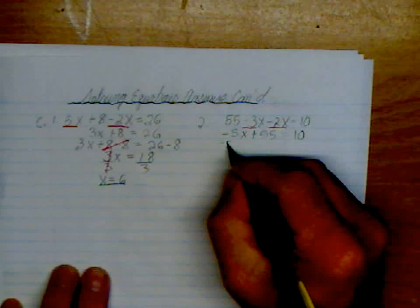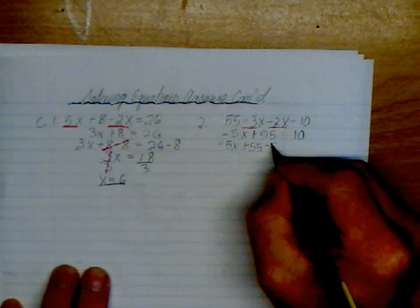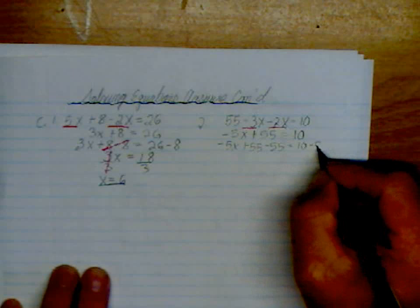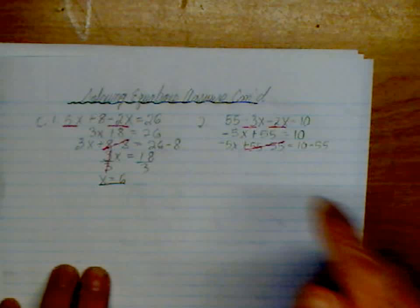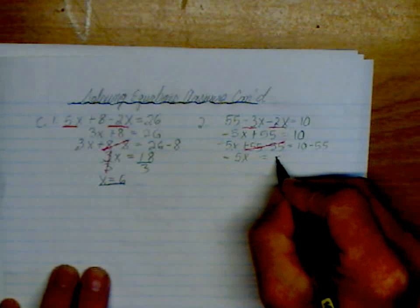We need to minus 55 from both sides. So this is how we get rid of it. And this is how we put it over yonder. So we're left with on the left hand side, negative 5x is equal to negative 45. Be super careful with the signs, girls.